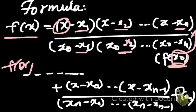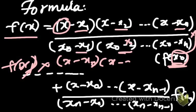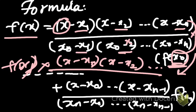For example, if the term f of x1 into that thing comes into picture, we will have x minus x0 into x minus x2, but we won't be having x minus x1. And so on, it's going to be x minus xn, and it's going to be the same. It'll be x1 minus x0 into x1 minus x2, and so on.